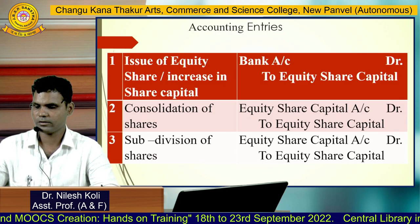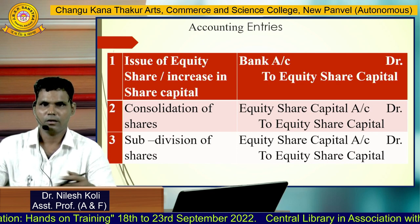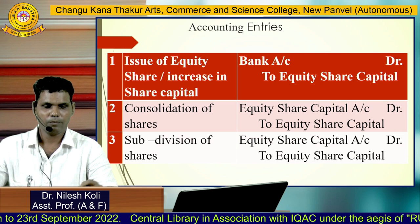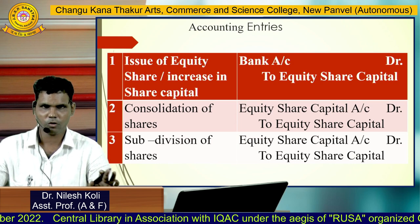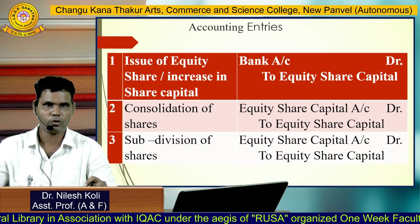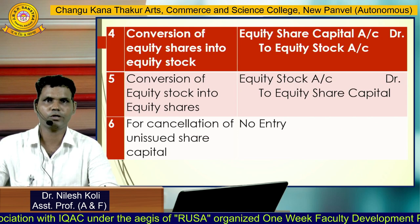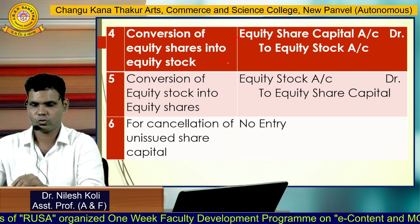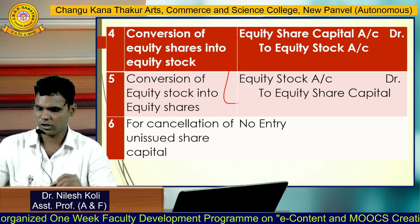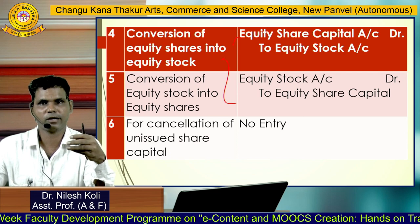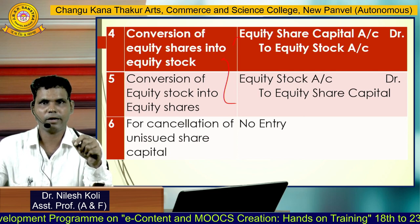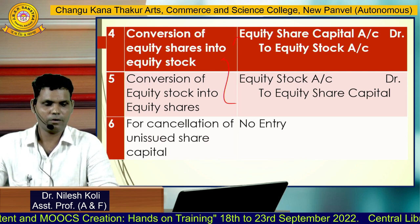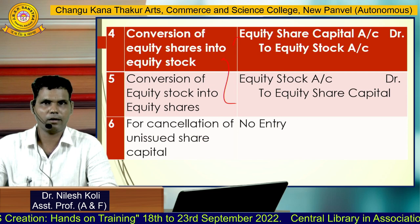Accounting entries for alteration of share capital: for issue of equity shares, the entry is Bank Account Dr. to Equity Share Capital. For consolidation of shares, the entry is Equity Share Capital (old) Dr. to Equity Share Capital (new), with no change in total amount. Similarly for subdivision. For conversion of equity shares into equity stock: Equity Share Capital Dr. to Equity Stock. For conversion of equity stock into equity shares: Equity Stock Dr. to Equity Share Capital. For cancellation of unissued share capital, if shares have not been issued, no entry is passed in the books of account.